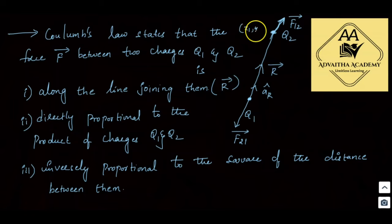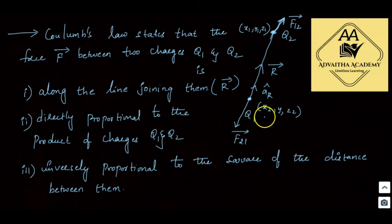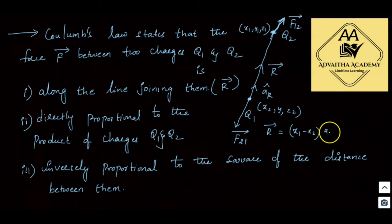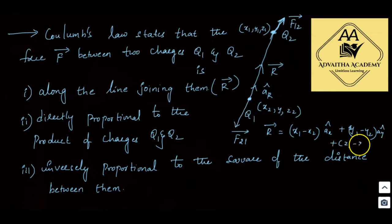Suppose charge q1 is at point (x1, y1, z1) and charge q2 is at point (x2, y2, z2). Then r-bar is given by: r-bar = (x1 − x2) a-x cap + (y1 − y2) a-y cap + (z1 − z2) a-z cap, which is the final point minus the initial point.